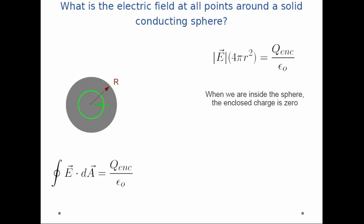However, this time we're inside the sphere. And we notice that since it's a metal sphere, the enclosed charge is just 0. In that case, the electric field has to be 0.